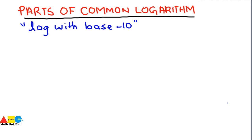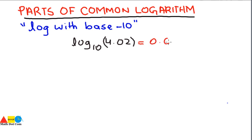First of all, we will revise the common logarithm concept. It can be written mathematically as log with base 10, and we need to find it for 4.02. If you use the calculator, you get 0.6042 — meaning how many times you multiply 10 to get 4.02. So this is the answer of the common logarithm of 4.02. We will now see what the parts of the common logarithm are.